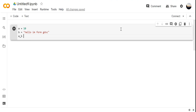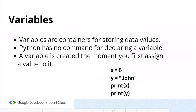For example, I'm giving b = 20 and running this. As you can see, Python has no command for declaring a variable — once you assign any value, the variable will automatically be declared. A variable is created at the moment you first assign a value to it.